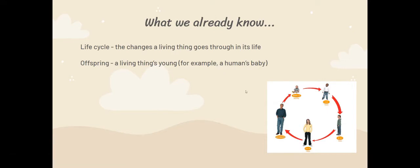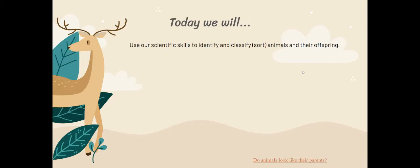We also learnt the key term offspring. An offspring is a living thing's young. So for example, a human's baby is their offspring. Today we are going to use our scientific skills to identify and classify — that's our science word for sort — animals and their offspring. Humans are not the only living thing that have offspring. Animals do too.